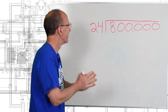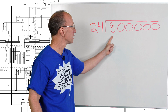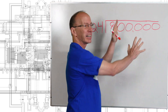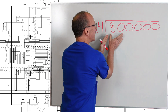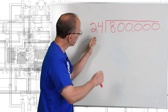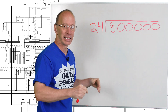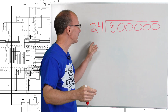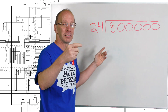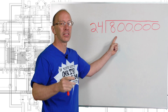All right, begin here. First of all, can I put 24 into 8? No, you can't. Can I put 24 into 80? Remember, we're taking this little by little. We're not looking at the gigantic number, we're just taking it step by step. So can I put 24 into 80? Let's first of all round 24 to 25. How many times can I put 25 into 80? Well, 25 times 3 would be 75. And so I know I can probably put 24 into 80 three times.